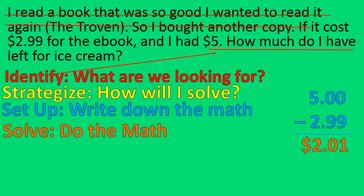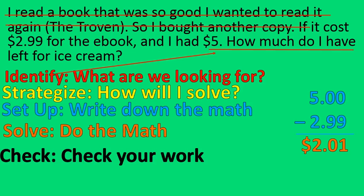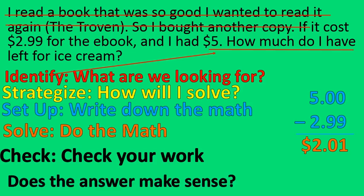Now I'm going to do the actual math, solve it, and I'm going to check my work. There are several ways I can check my work with this question. The first way is to use some rounding and estimating. This is $5 minus about $3. $5 minus $3 is $2, so the answer should be about $2. So I ask myself: does it make sense that the answer is $2.01? And yes, that's correct — it does. It's about right.